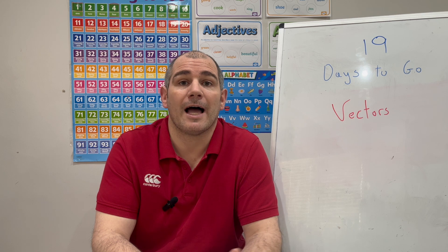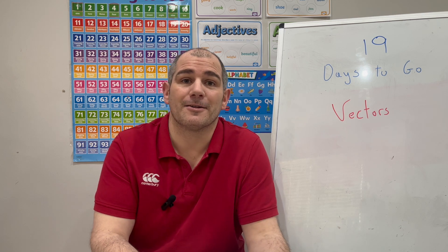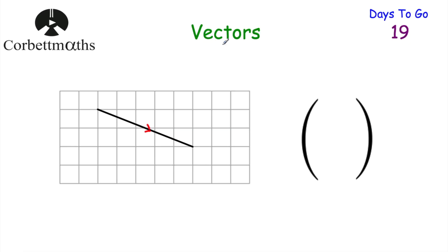In this video we're going to go through vectors. Today we're going to look at vectors in diagrams and also column vectors. Here we've got a vector — you can see this vector goes 1, 2, 3, 4, 5 squares to the right and it goes 1, 2 squares down.